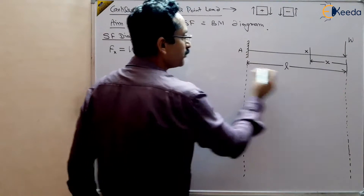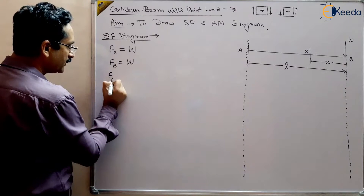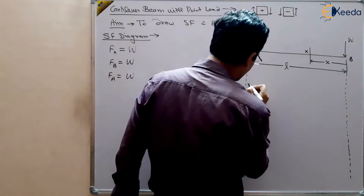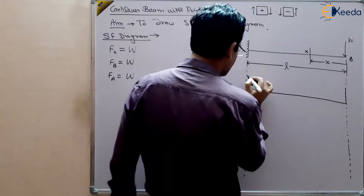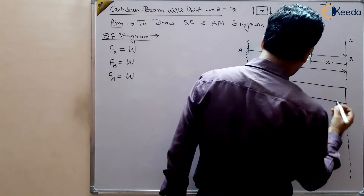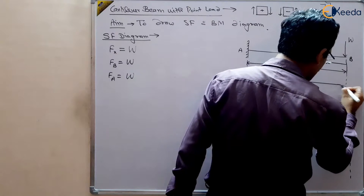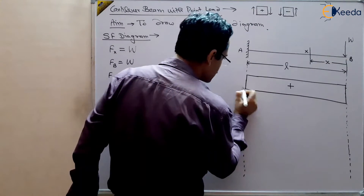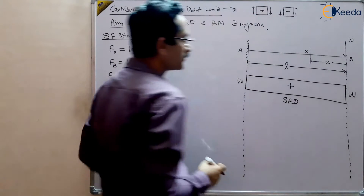If we define point A and point B, the same force will be there. At point B it will be W, at point A it will again be W, and at all intermediate points it will remain W. So we draw the shear force diagram: this is our base, and the shear force is W at B, W at A, and uniform throughout. This is our shear force diagram — SFD.